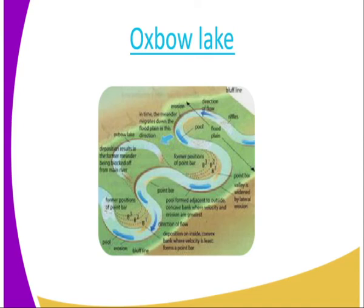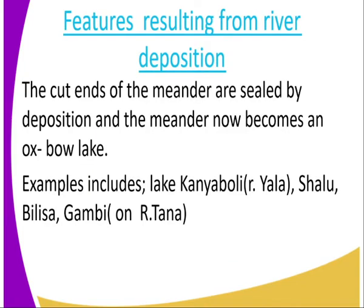We start from the meandering of the river. After that the meander neck is formed, where the lake is formed just adjacent to the river. The cut ends of the meander are sealed by deposition and the meander now becomes an oxbow lake. Examples include Lake Kanyaburi and lakes Sharu, Birisa, and Gambi, all found on River Tana.